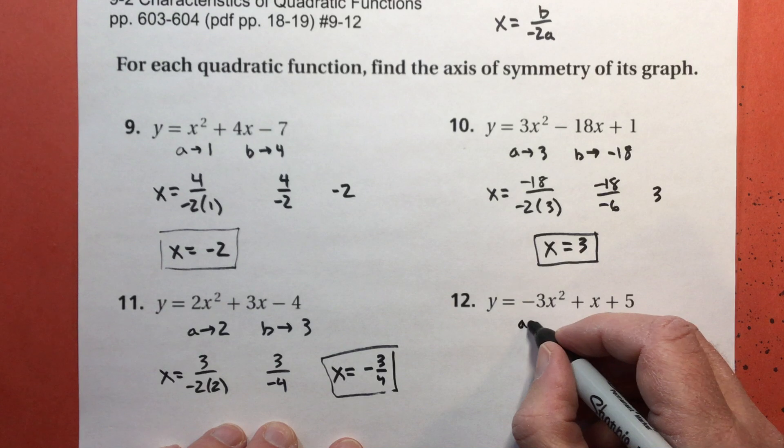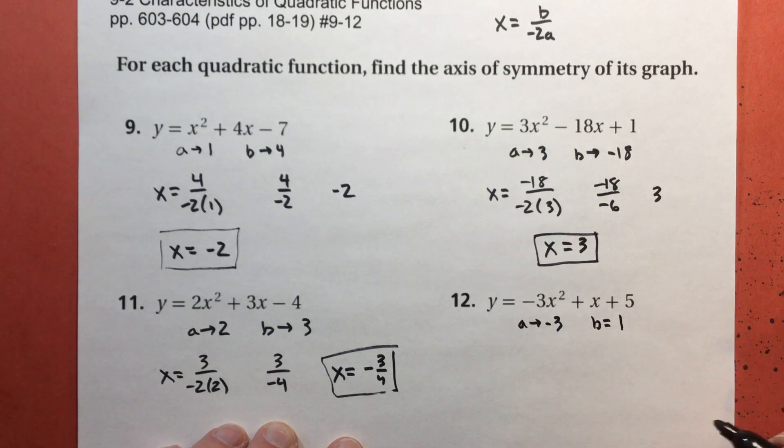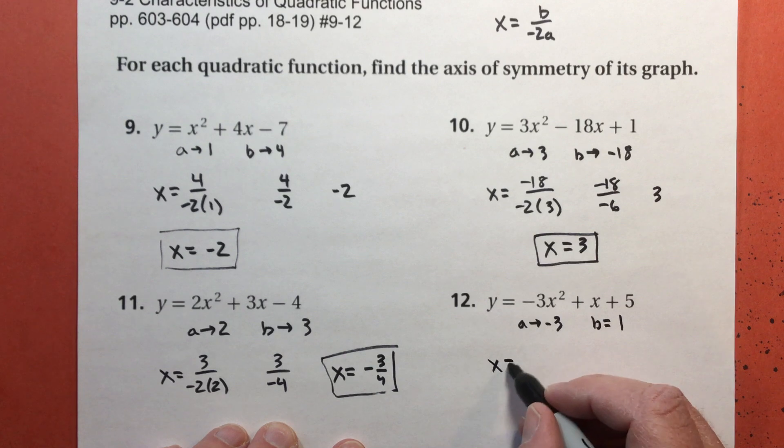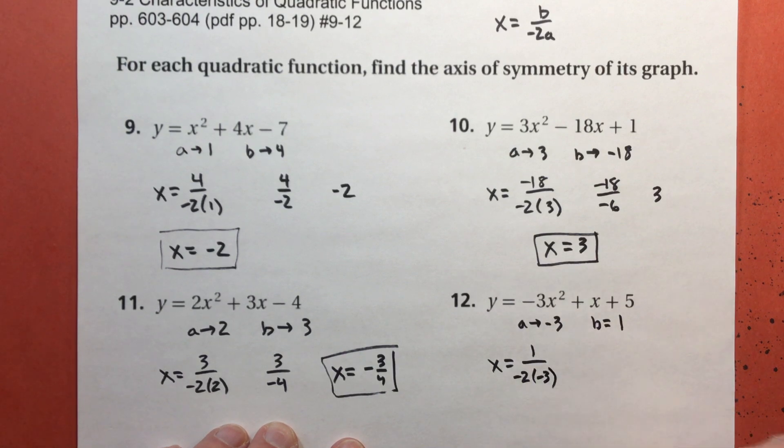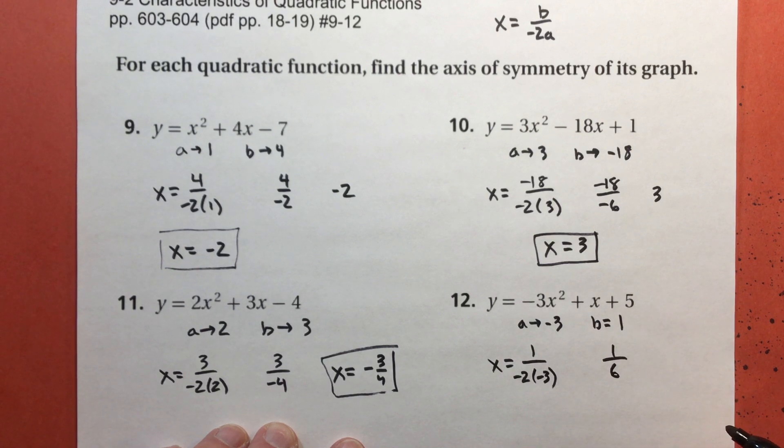And finally, my a is negative 3. My b is 1. So I get 1 over negative 2 times negative 3. That's going to be 1 over positive 6. So my axis of symmetry is x equals 1 sixth.